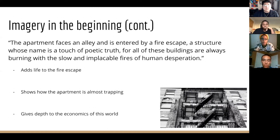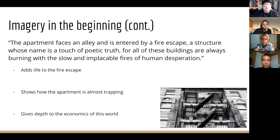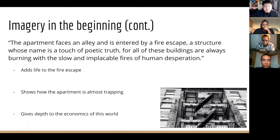I also wanted to talk about the imagery when he's describing the fire escape. He says the apartment faces an alley and is entered by a fire escape — a structure whose name is a touch of poetic truth, for all of these buildings are always burning with the slow and implacable fires of human desperation. That immediately added life to the fire escape. He could have easily just said there's a fire escape, but instead he gives it its own presence — almost obtrusive. The fire escape means more than just a fire escape, and it shows how the apartment could be trapping.